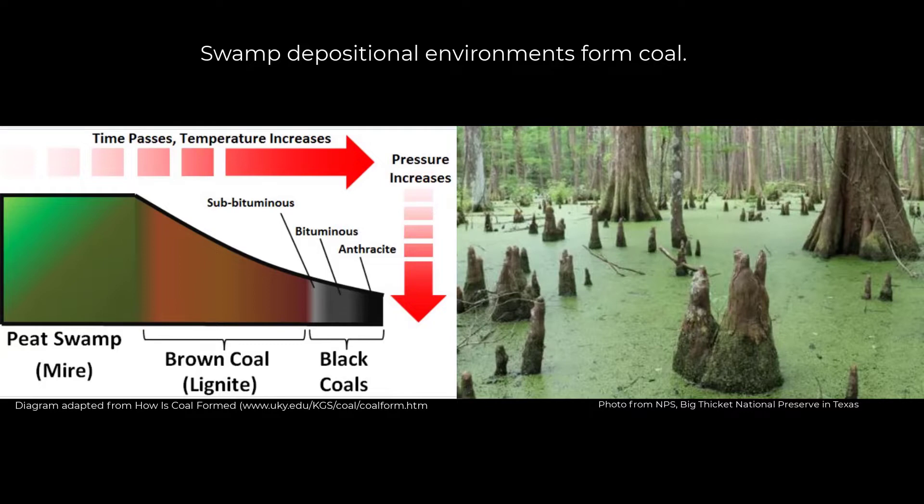Over time it can be literally metamorphosed by pressure and heat into a low-grade coal called lignite. The longer it's in the ground and the more pressure that accumulates, you can get what's called sub-bituminous, then even more heat and pressure gives you bituminous, and then you can get anthracite, which is the highest grade coal.